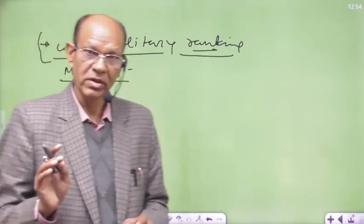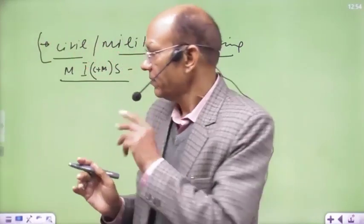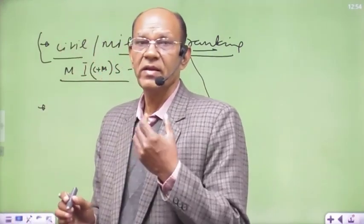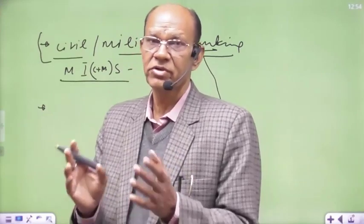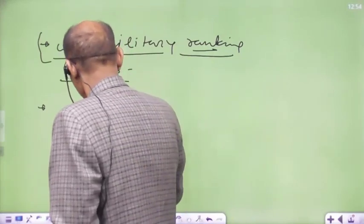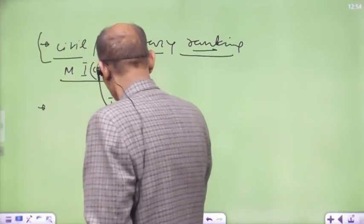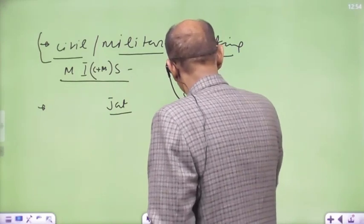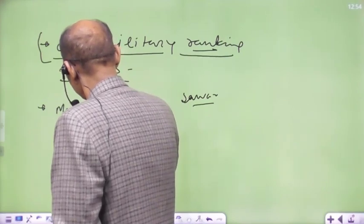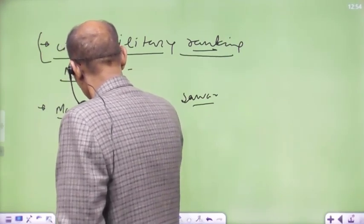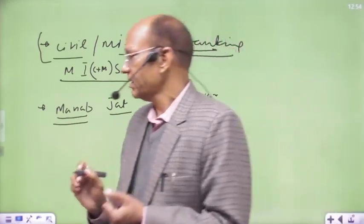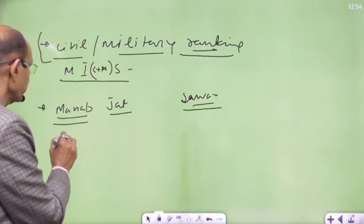Initially, it was only one rank, but later the system was divided into two ranks which we called Jat and Sawar. Jat rank, Sawar rank, which was slightly different. How can we explain this? Jat rank - suppose a Mansabdar's rank is 5,000.